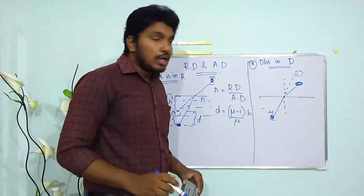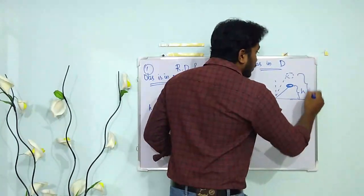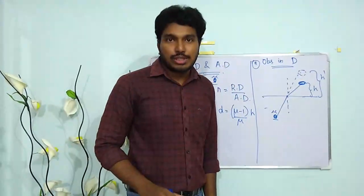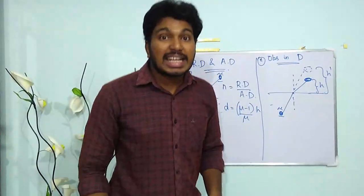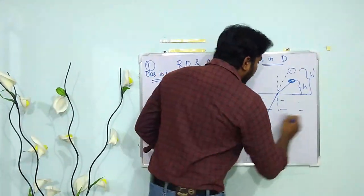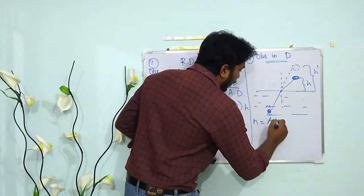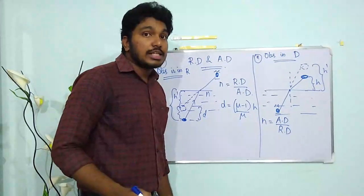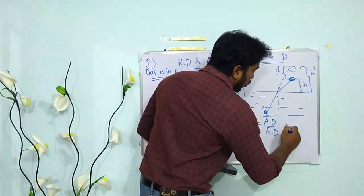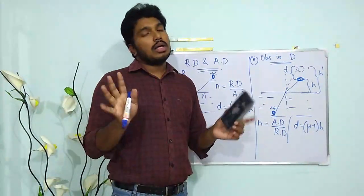Light from the object comes in and bends towards the normal (rarer to denser). The observer's line of sight makes it appear the object is farther away — the actual height was h but the person inside sees it at h′. In this case: n = apparent depth / real depth, and the shift d = (μ − 1) × h.